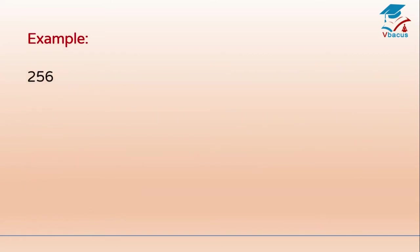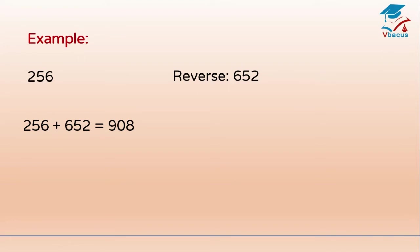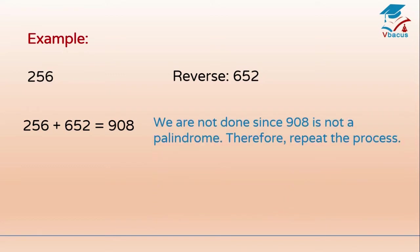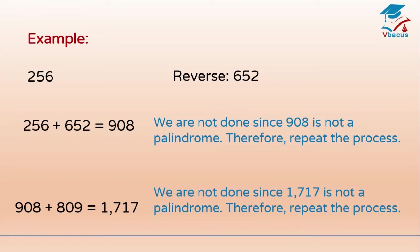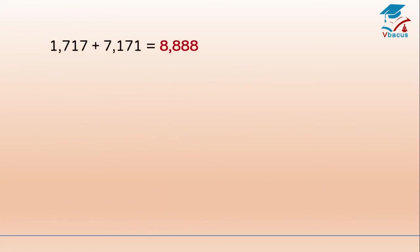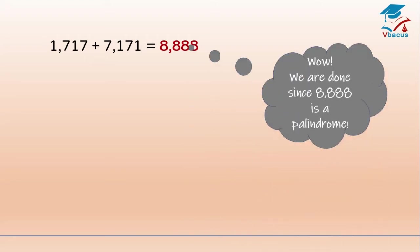Let us take another example: 256. The reverse of it is 652. 256 plus 652 is equal to 908. We are not done since 908 is not a palindrome — repeat the process. 908 plus 809 is equal to 1717. We are not done since 1717 is not a palindrome — repeat the process. 1717 plus 7171 is equal to 8,888. Wow! We are done since 8,888 is a palindrome.